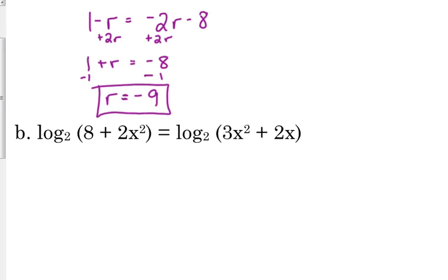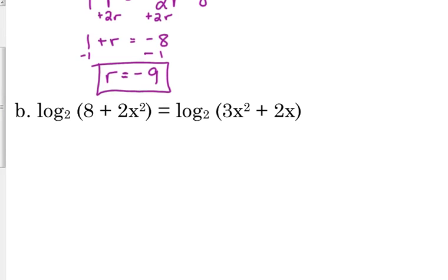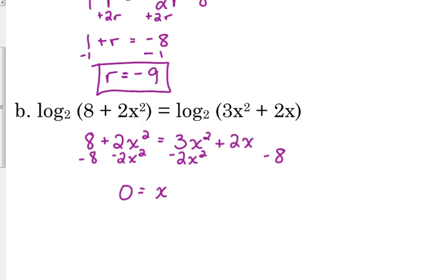B is a similar thing. Log base 2 on both sides. We set what's inside the logarithm equal to the other side. This is a quadratic. We've got x squared, so everything has to be on one side. So I'm going to subtract the 8 and the 2x squared. So I've got 0 is equal to x squared plus 2x minus 8. That factors into x plus 4 times x minus 2.